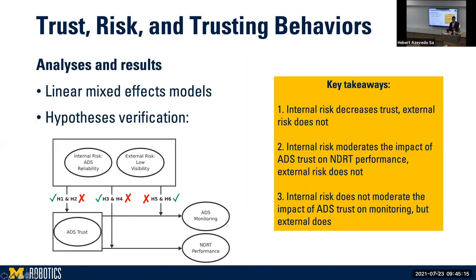We investigated the relationships among risk, trust, NDRT performance, and ADS monitoring ratios using linear mixed effects models. We found three supported hypotheses and three unsupported ones. The key takeaways are that internal risk decreased trust while external risk did not; internal risk moderated the impact of ADS trust on NDRT performance while external risk did not; and internal risk did not moderate the impact of ADS trust on monitoring, but external risk did. In summary, the type of risk really matters, and different types of risk have different impacts on different trusting behaviors.